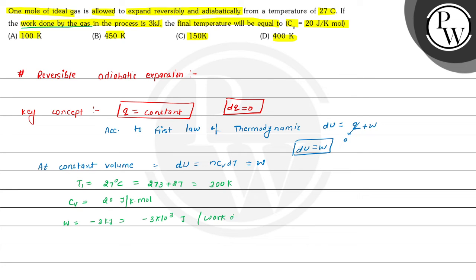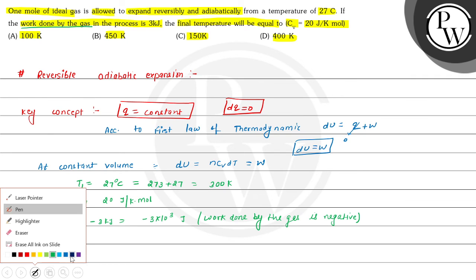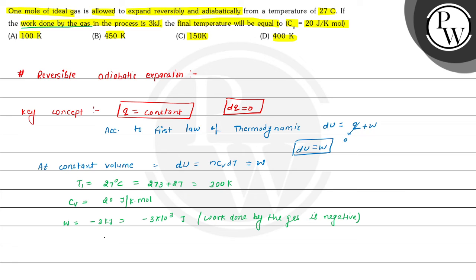Work done by the gas is negative. Now we can substitute these values in the formula. We can write the value of W, that is minus 3000, is equals to number of moles 1, multiplied by CV that is 20, multiplied by DT, that is change in temperature, which is T2 minus T1. The initial temperature T1 is given as 300 Kelvin.